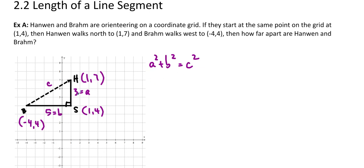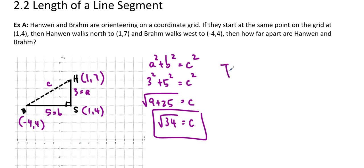So a is 3, and b is 5, and that gives us the length squared. We're going to do √(9 + 25), that gives us c, which is √34, which we can't simplify. And since it doesn't tell us to round, we're just going to leave it as an exact value. So they are √34 units apart. It doesn't say how far each unit is, so we'll just write it like that.